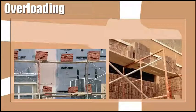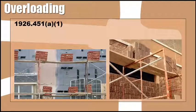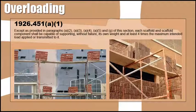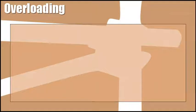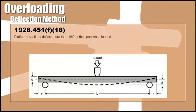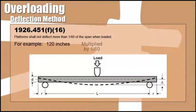Overloading is simply placing more weight on the scaffold than it can hold. Paragraph 1926.451 states that, except as provided in paragraphs A2, A3, A4, A5, and G of this section, each scaffold and scaffold component shall be capable of supporting, without failure, its own weight and at least four times the maximum intended load applied or transmitted to it. A simple method to determine if a scaffold is overloaded is the deflection method: platform planks or decking must not deflect more than 1/60th of their span when loaded. The deflection is measured with a tape measure and a straight edge. For example, 120 inches multiplied by 1/60 equals 2 inches of maximum deflection.